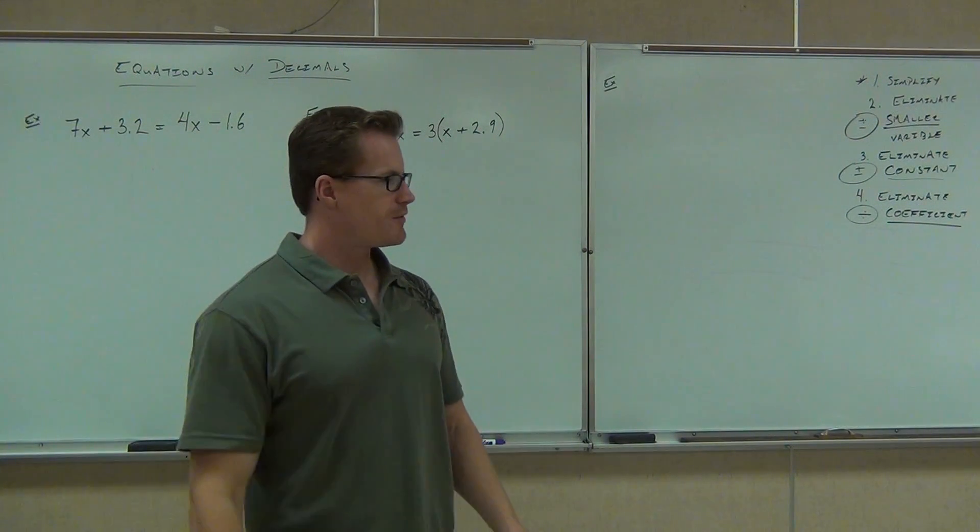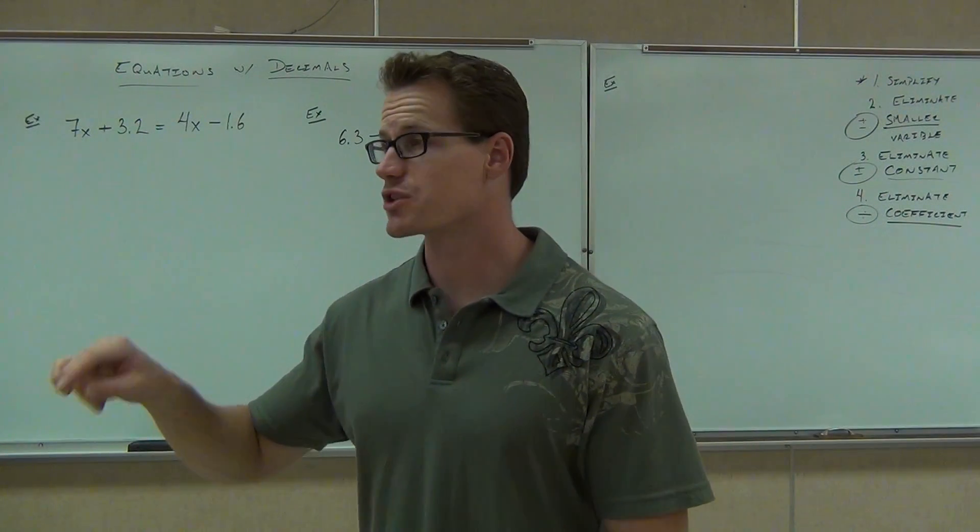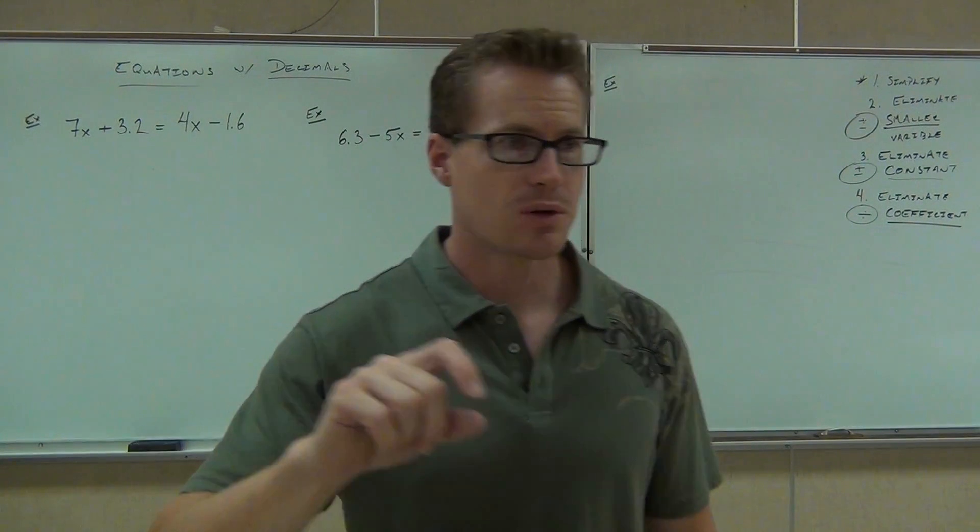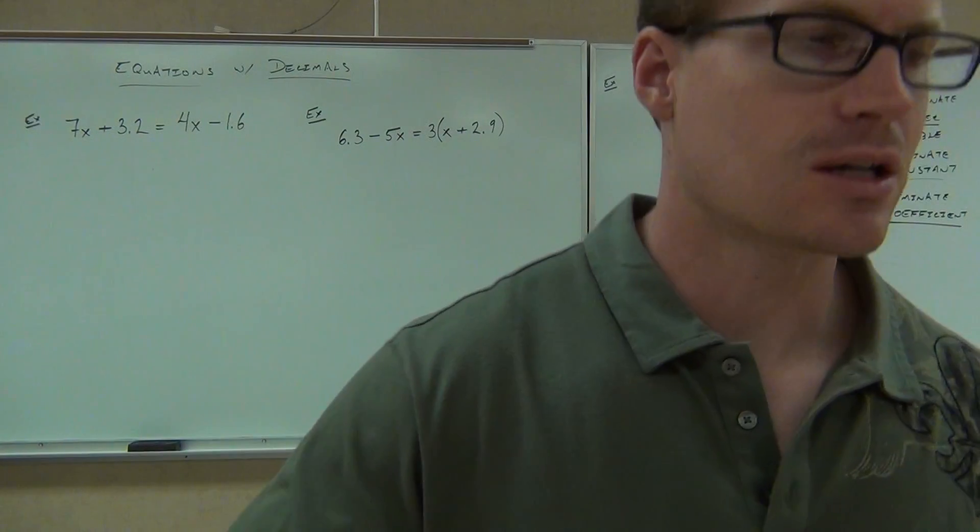So simplifying, we really don't have anything to simplify here, but we do have two variables, so you should be getting rid of the smaller one. After that, get rid of your constant term. After that, the last thing you do is divide.